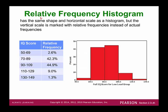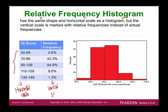Now let's take a look at the relative frequency histogram. On the horizontal axis we still use classes, and on the vertical scale it should be the relative frequency in terms of percentage. We divide each individual class frequency by the total frequency to get the corresponding percentage. The first class, 50 to 69, has a relative frequency of 2.6%.